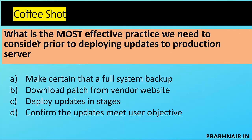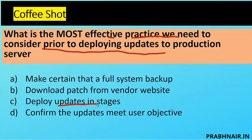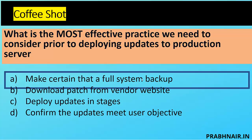Question: what must we consider prior to deploying updates to a production server? Option A — make certain that a full system backup is taken. Option B — download the patch from the vendor website, but there's no assurance the patch is safe. Option C — deploy updates in stages, which is good for complex environments. Option D — confirm the update meets user objectives. However, before deploying any kind of update, you must take a backup first, because if deployment fails you need to roll back, and without a backup you may lose previous data. The answer is A.